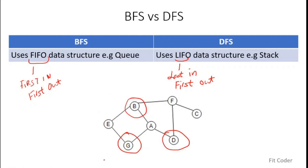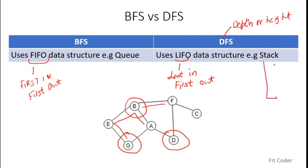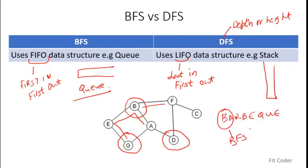For DFS, we take a path and keep going until we meet a dead end. When we meet a dead end, we backtrack to reach the next unexplored node. From A we go towards B, from B to E, from E to G, and then we pop nodes to backtrack — this is in alignment with the LIFO data structure, which is a stack. A helpful mnemonic: D is for depth or height, and a stack is usually drawn vertically — so DFS relates with stack. BFS is breadth, which is horizontal, aligning with a queue. Also remember the word 'barbecue' — B is BFS and Q is queue. So for BFS, we use a queue.